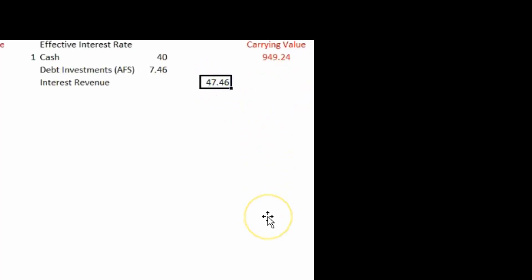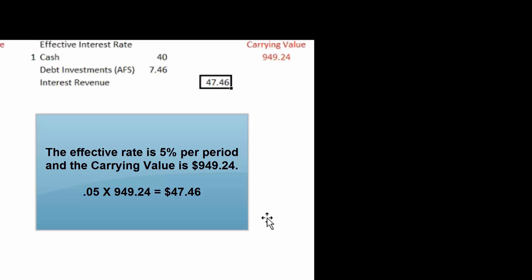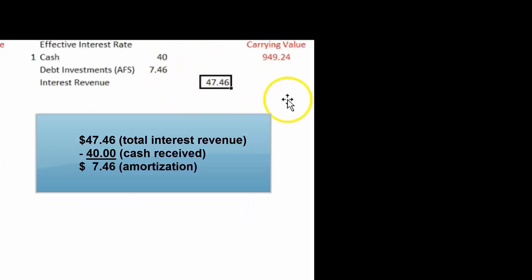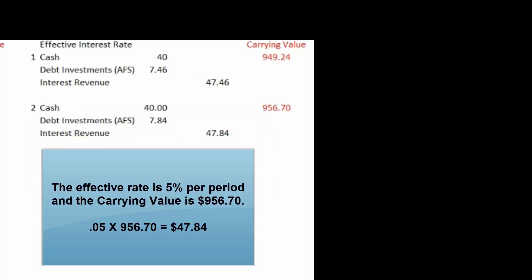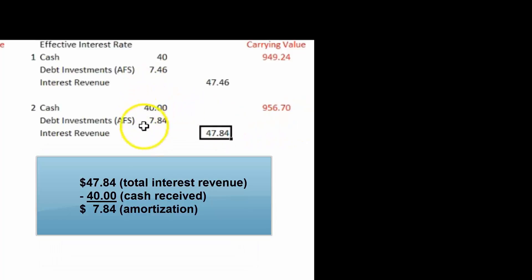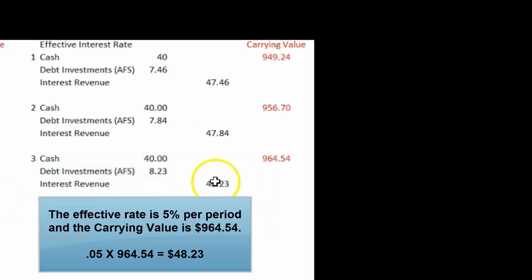Here's the carrying value of the bonds at the beginning of the period. $47.46 is 0.05 — the effective rate per six months — times the carrying value, giving us $47.46 of interest revenue. I know I'm getting a check for $40, so I debit cash for $40, credit interest revenue for $47.46, and to make the journal entry balance I need a debit of $7.46 to debt investments (available-for-sale). Six months later, the carrying value is $949.24 plus $7.46, giving me $956.70. Interest revenue for this period is 0.05 times $956.70, which gives me $47.84. Cash is still $40, so I debit debt investments for $7.84.